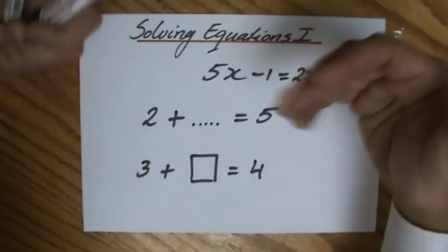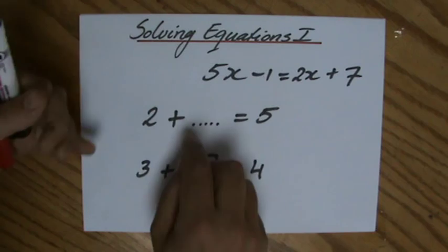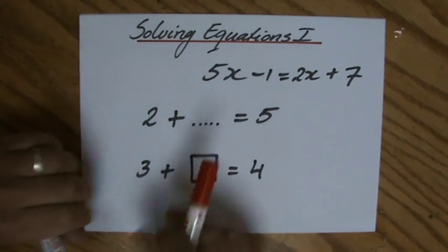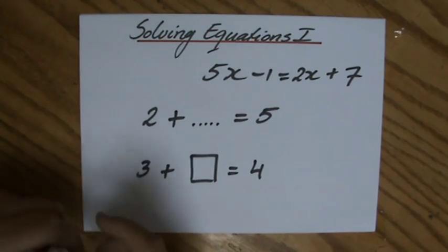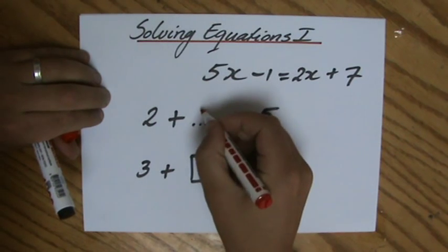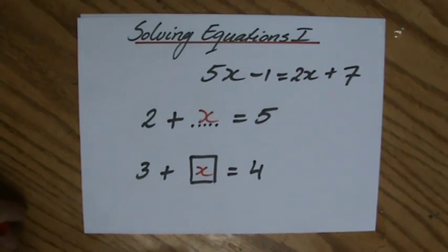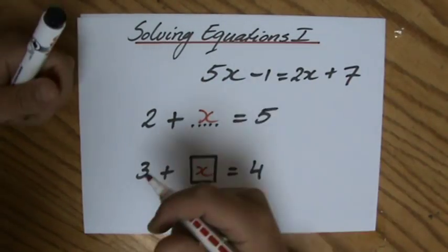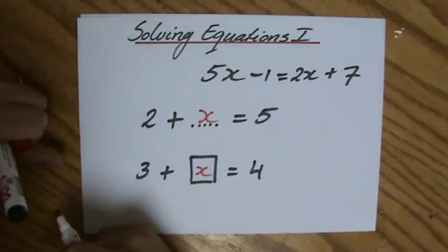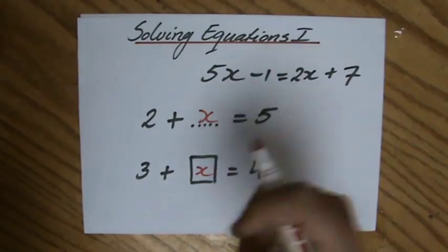And step by step you will notice that because now rather than those dots or rather than the empty square, we are going to say 2 plus x equals 5 or 3 plus x equals 4. So rather than those dots or the empty square, we are going to use a letter x or a or b or c.